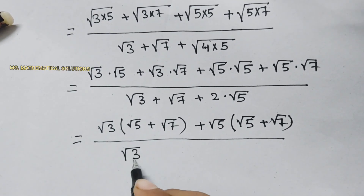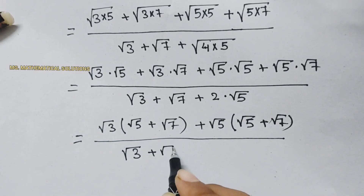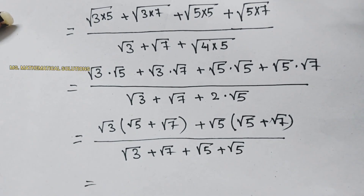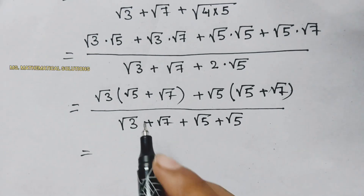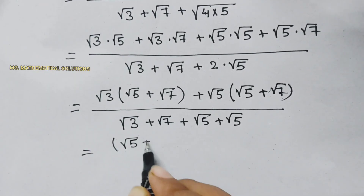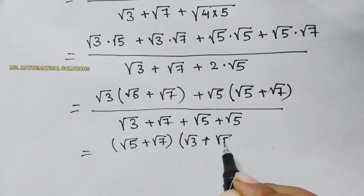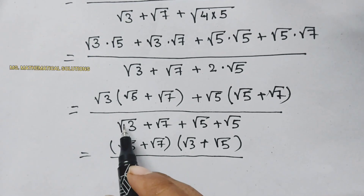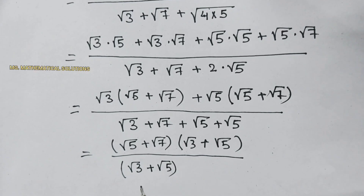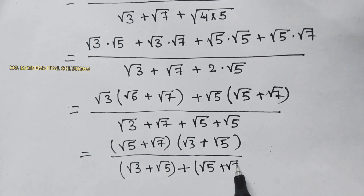So the numerator becomes root 3 times the quantity root 5 plus root 7, plus root 5 times the quantity root 5 plus root 7, and in the denominator we also have root 5 plus root 7, since 2 times root 5 can be written as root 4 times root 5, which groups with root 5 plus root 7.